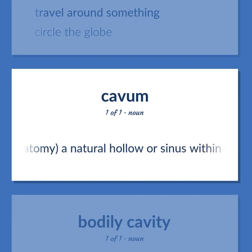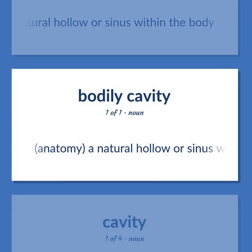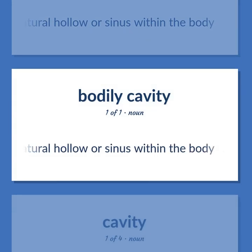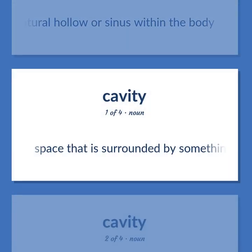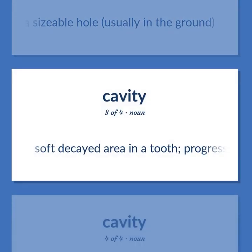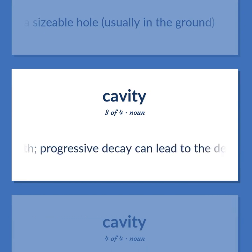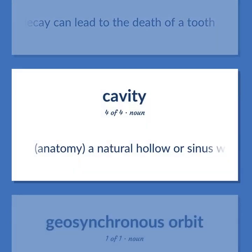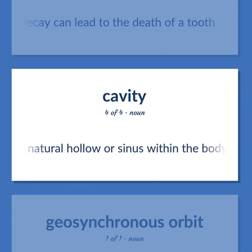Cavity: Anatomy, a natural hollow or sinus within the body. Space that is surrounded by something. A sizable hole, usually in the ground. Soft decayed area in a tooth — progressive decay can lead to the death of a tooth. Anatomy, a natural hollow or sinus within the body.